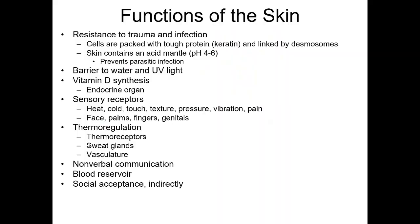Now that we know the structure of the skin, let's quickly go over the functions of the skin. Being very tough, containing a very tough protein called keratin and linked by tight junctions, skin is your first line defense against trauma and infection. Skin is acidic — it can range between 4 to 6 in pH — and it is your first line defense against microbial infection and trauma. Because it secretes oil, it is also waterproof and protects your internal organs from UV radiation. It is also an endocrine organ, meaning that a substance is going to be secreted directly into your bloodstream. Skin helps with the production of vitamin D; the first step in vitamin D synthesis is your skin getting exposed to sunlight.